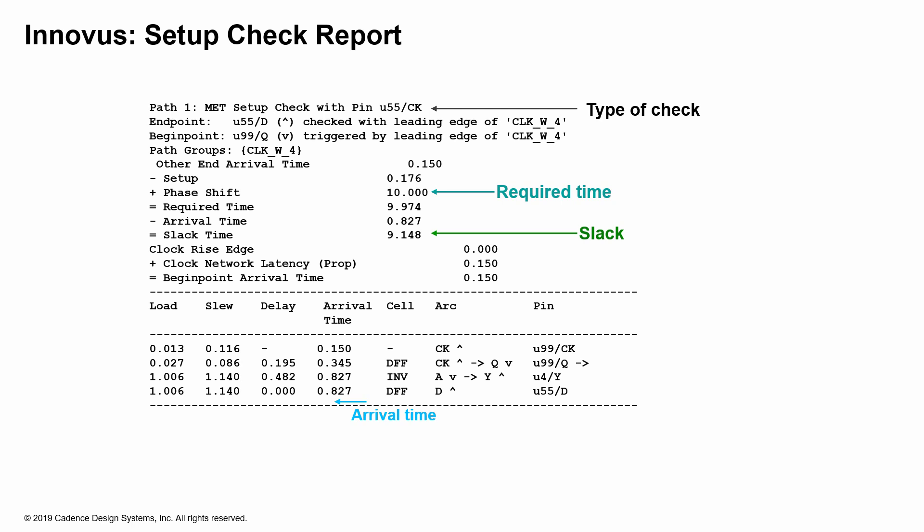Then it moves on to the other end arrival time, which is where the capture clock actually captures the data. Any delays leading up to that capture clock — such as buffers — constitute the other end arrival time. The required time calculation also shows the phase shift and setup. The phase shift is one clock period because it's the same clock, and then the setup is subtracted from that.